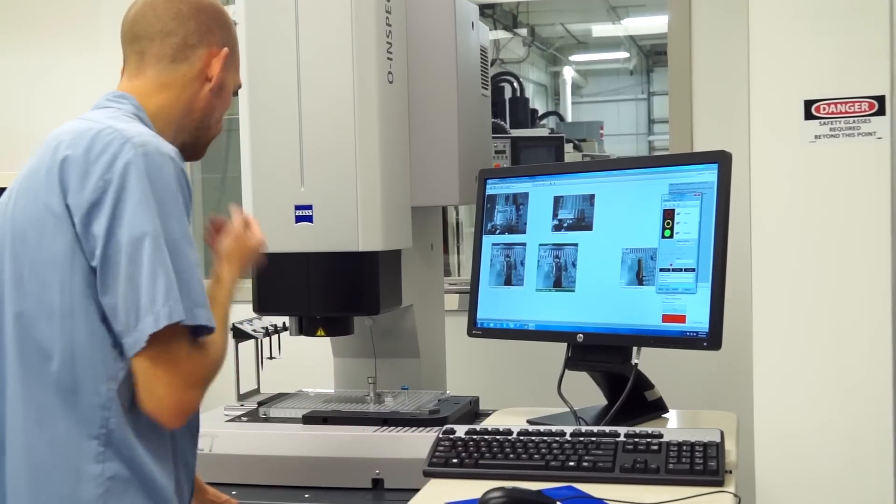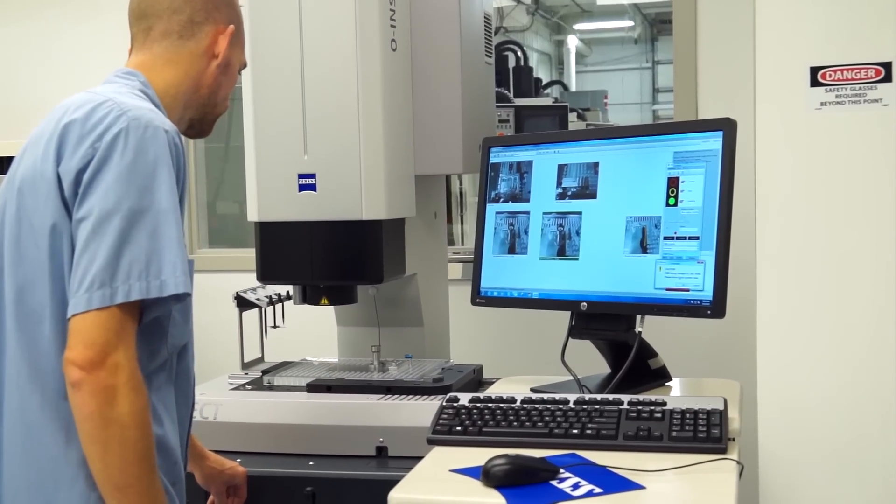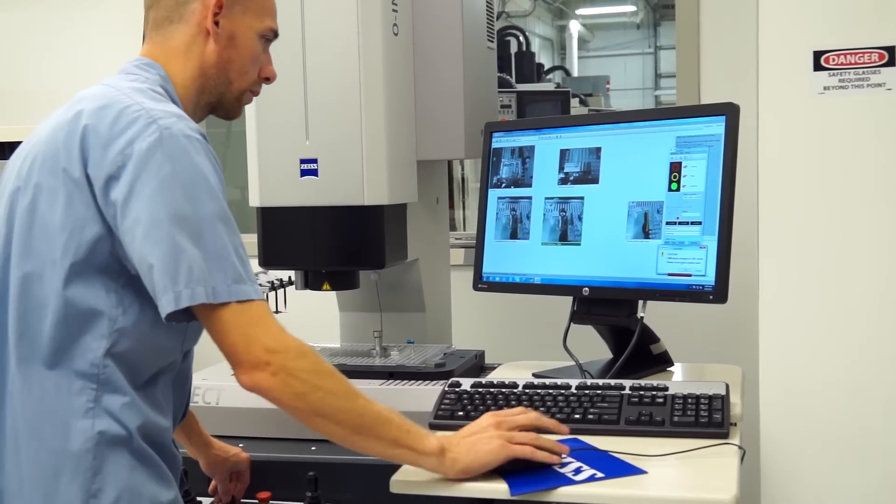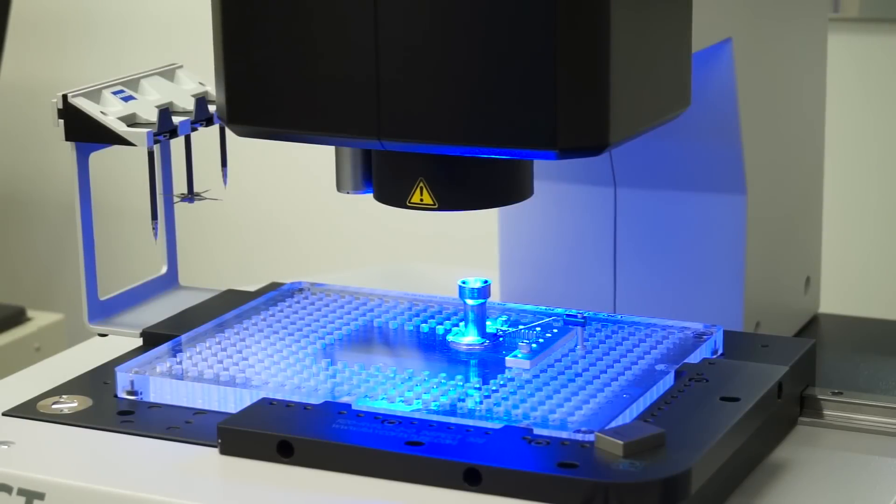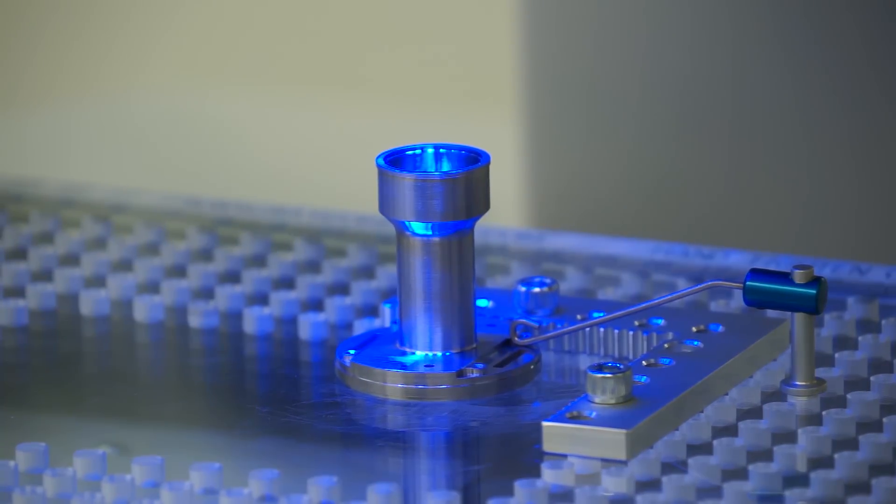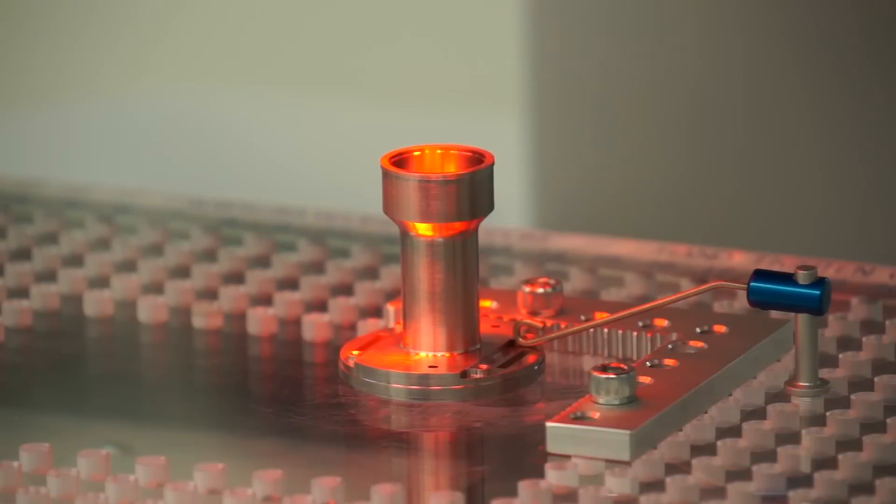Our main machine process is 5-axis, but we also have 3-axis for secondary operation. And we do screw machine work to keep up with the demand for some of our medical parts. We also have EDM that will do some tight tolerances and also square corners, which we can measure with the O-Inspect.